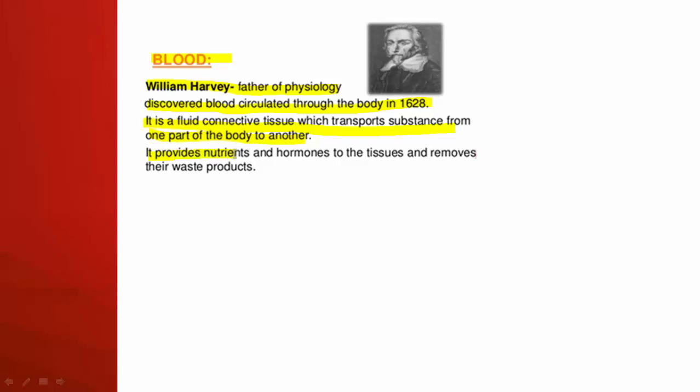This is a very important point: blood provides nutrients and hormones to the tissues and at the same time it removes their waste products — for example, carbon dioxide or urea which is excreted through urine. All these unwanted products are removed by the blood. That means blood is supplying substances as well as removing waste products. This fluid connective tissue circulating within the blood vessels is called blood.